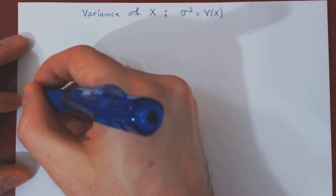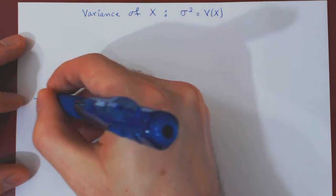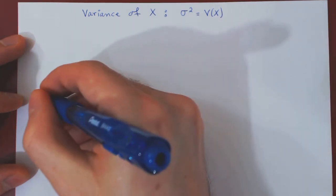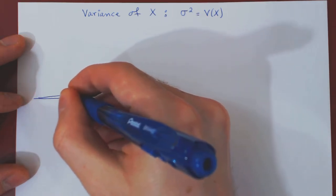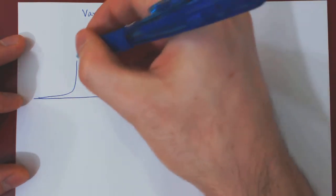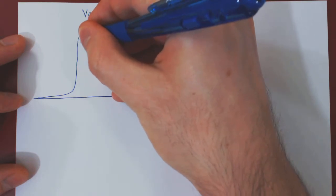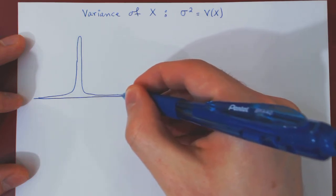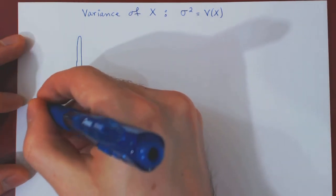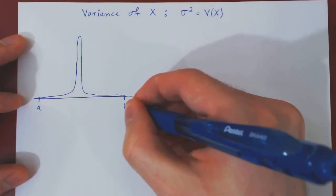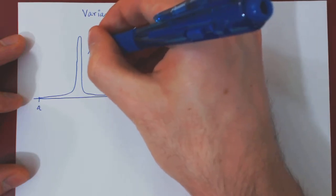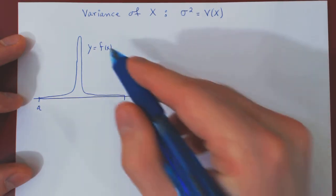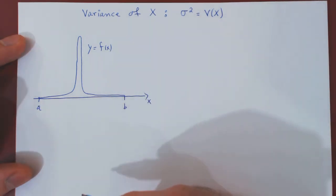Imagine the first case looking like this. So, we have the interval of all possible X values from A to B, and this is the probability density function of X, f(x). First possibility.